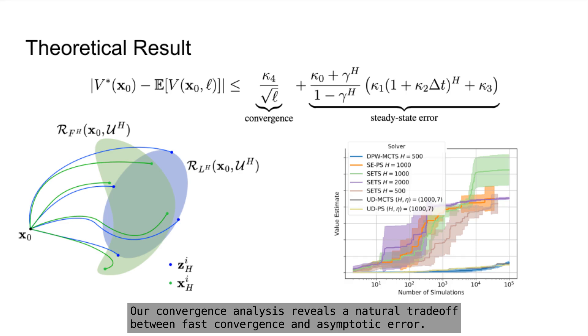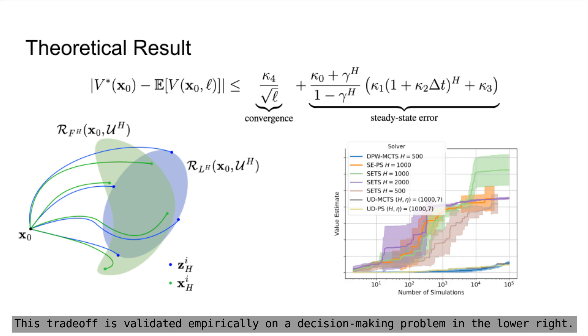Our convergence analysis reveals a natural trade-off between fast convergence and asymptotic error. This trade-off is validated empirically on a decision-making problem in the lower right.